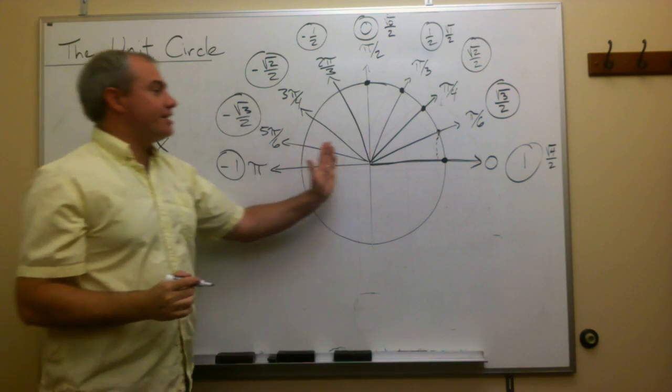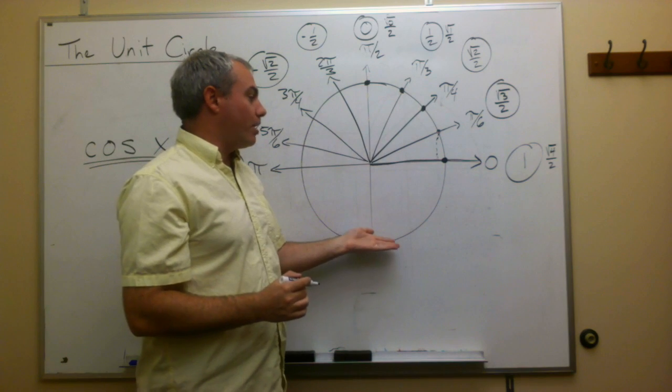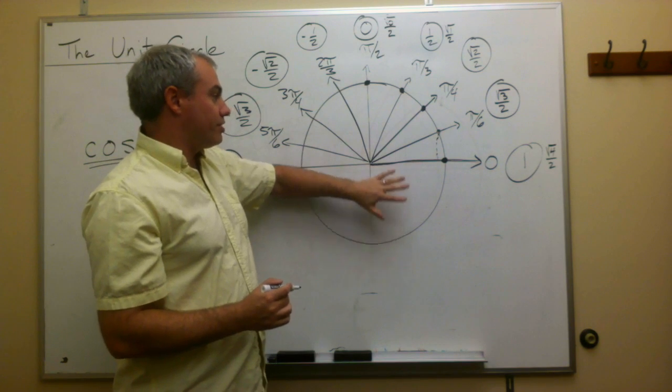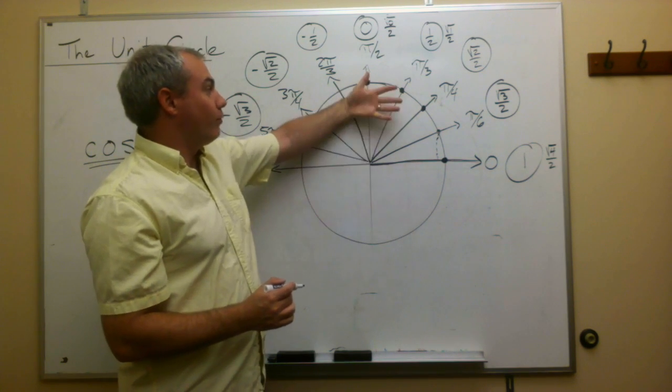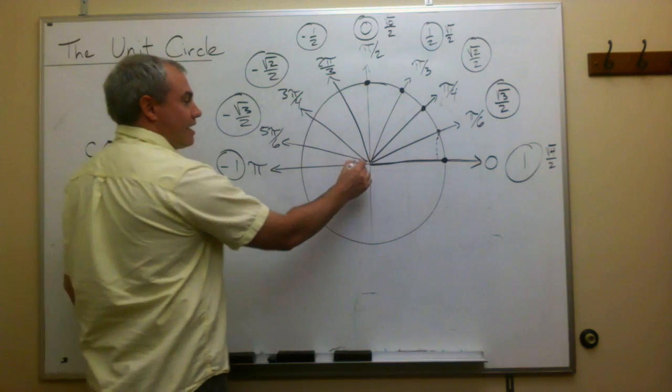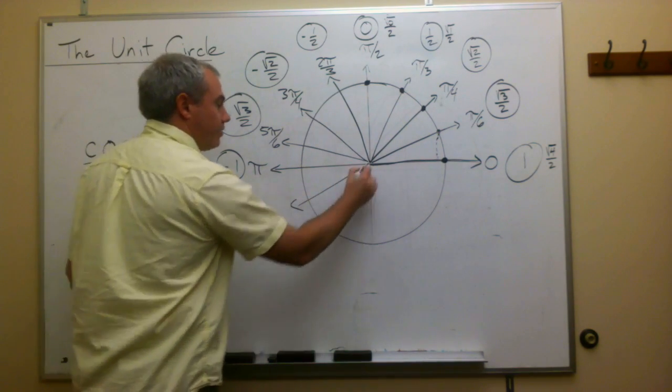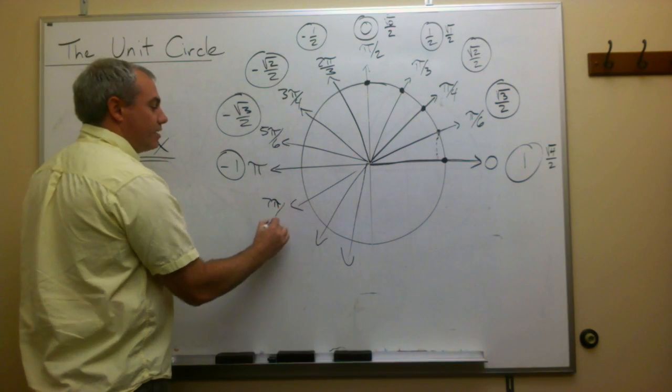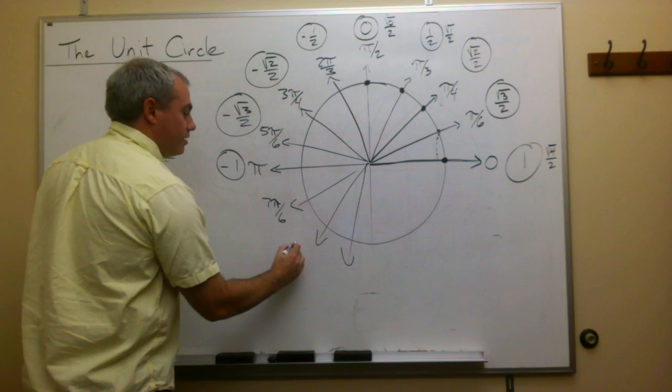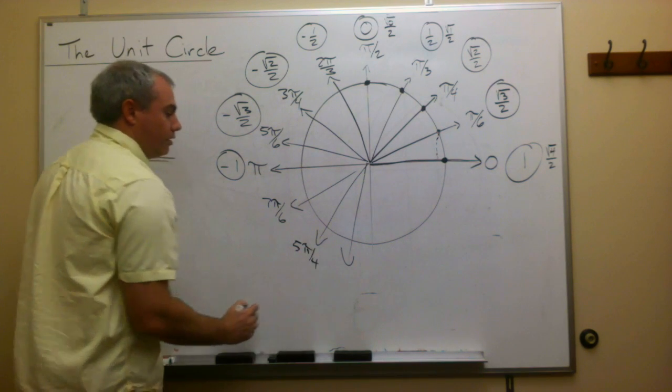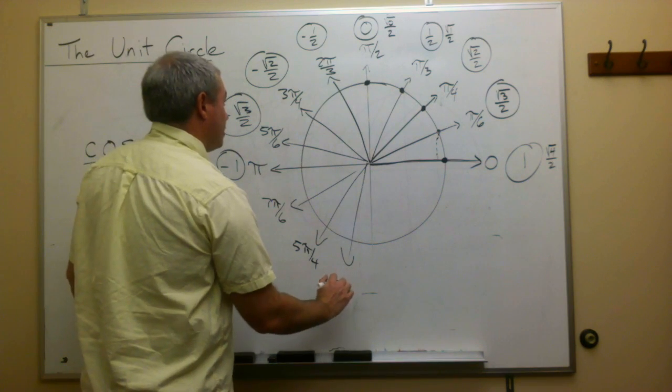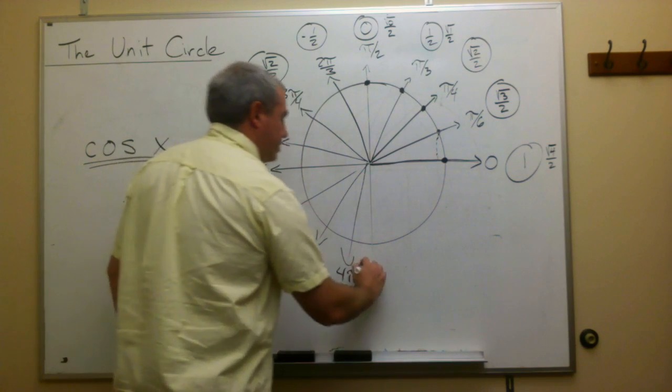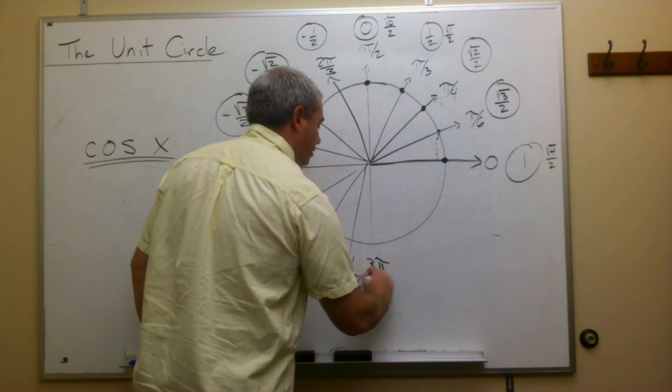Okay. So notice that it doesn't matter if I'm on the top of the circle or the bottom of the circle. The x value is the same. So everything that's on the bottom of this circle is just going to be a reflection of what's on the top of the circle. And what I mean by that is now let's go back. Let's list some angles here. The important angles I need to know about is this would be 7 pi over 6. This is 5 pi over 4. This one would be, let's see, 4 pi over 3.